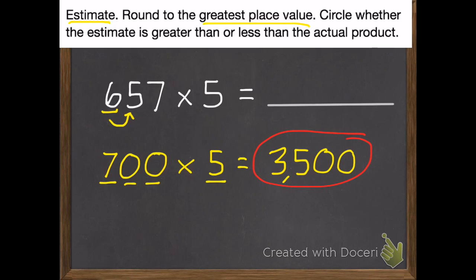The second half of my instructions say circle whether the estimate is greater than or less than the actual product. So my estimate is 3,500. And what I started with was 657. I rounded that up to 700. So my estimate was actually if there were 700, but in real life there weren't quite that many. There were only 657. So that means my estimate is going to be a little bit greater than the actual product. So I'm going to write greater than because my estimate is greater than the actual product.